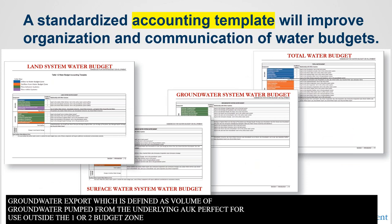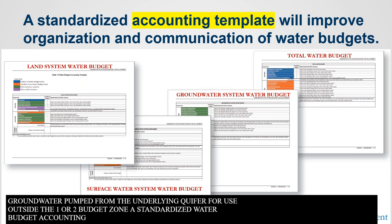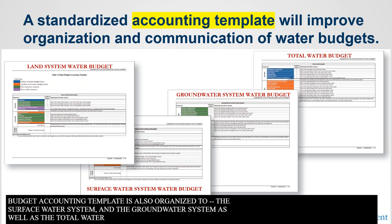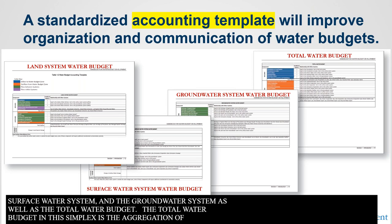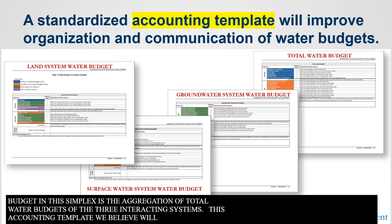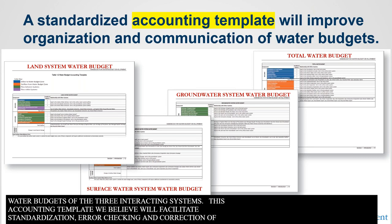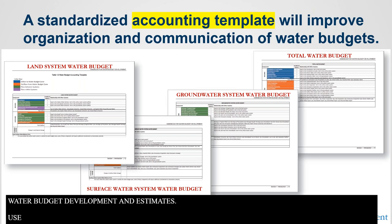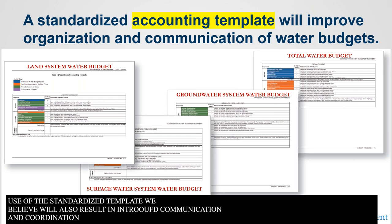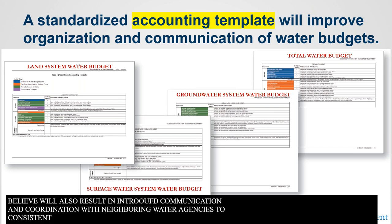A standardized water budget accounting template is also included in the handbook to help organize and present inflows and outflows for the land system, the surface water system, and the groundwater system, as well as the total water budget. The total water budget in this context is the aggregation of the water budgets of the three interacting systems. This accounting template will facilitate standardization, error checking, and correction of water budget estimates, and will also result in improved communication and coordination with neighboring water agencies through consistent water budget accounting across boundaries and water budget zones.